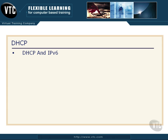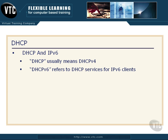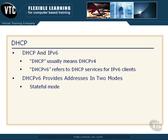Let's talk about DHCP and IP version 6. Normally when you hear the term DHCP, people are talking about DHCP version 4. When you hear the term DHCPv6, they're referring to the DHCP services for IPv6 clients. When dealing with DHCP version 6, you need to understand that we're working with a protocol providing addresses to clients in one of two modes. In stateful mode, clients acquire the IPv6 address and network information — things like DNS server addresses — and they acquire both of those pieces of information from the DHCPv6 server.